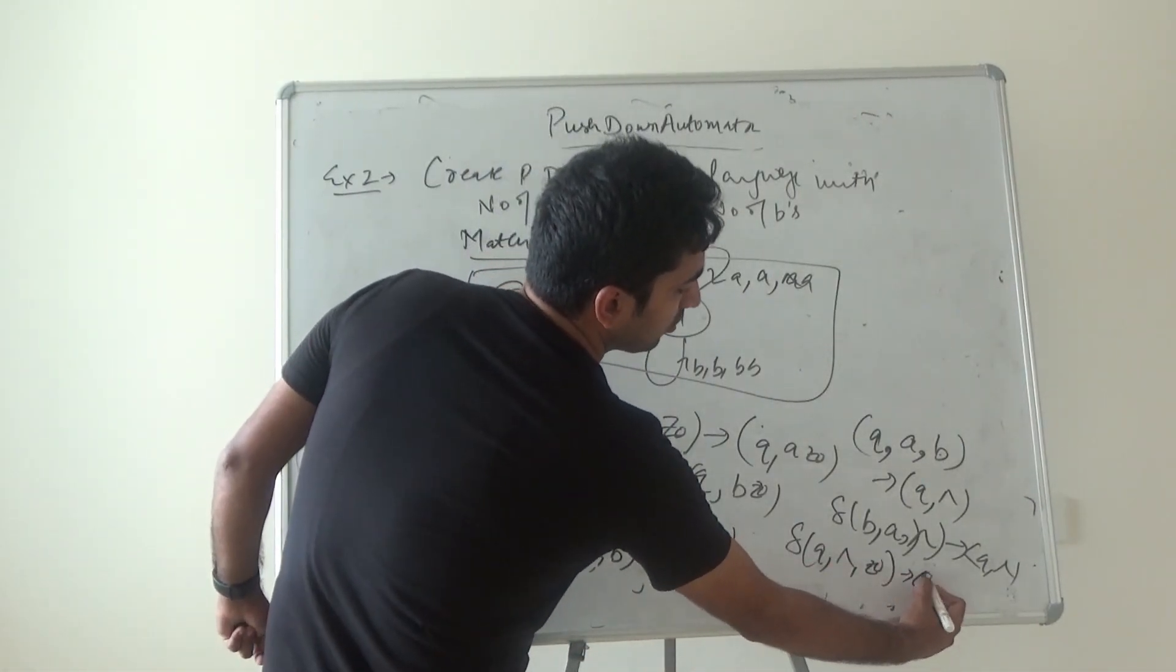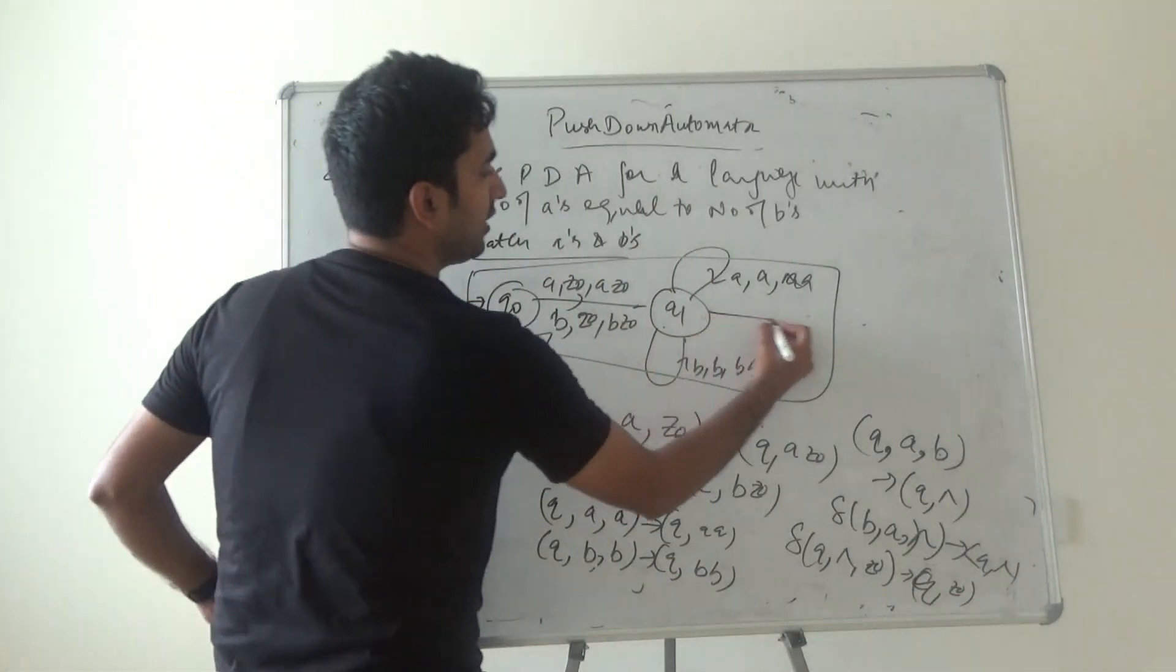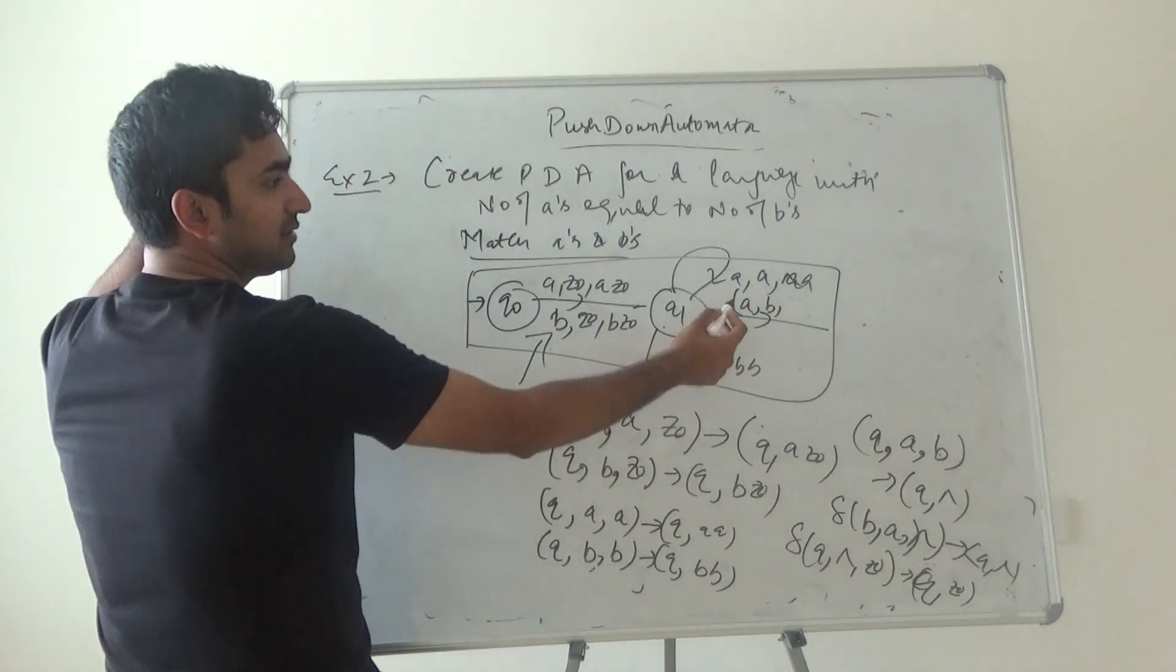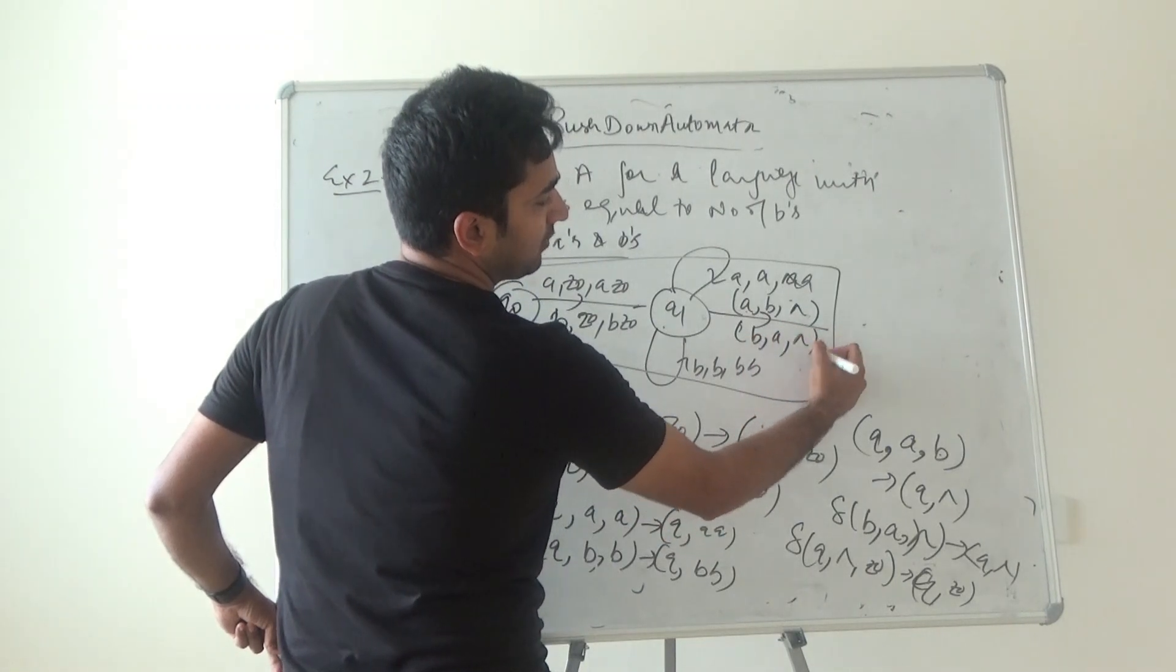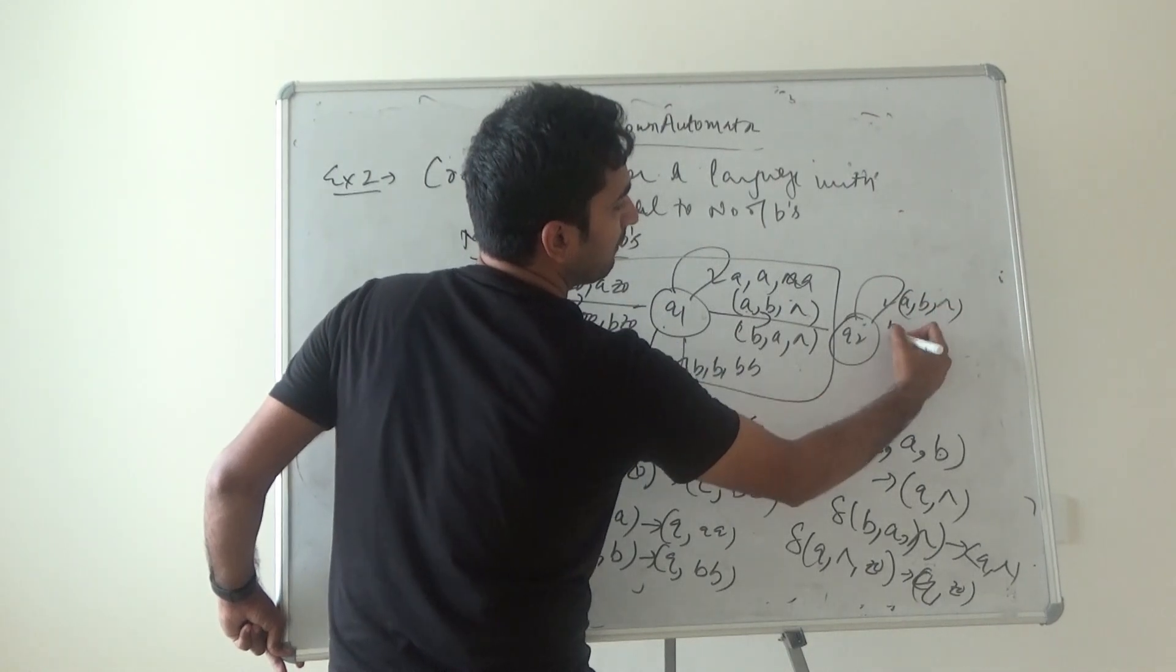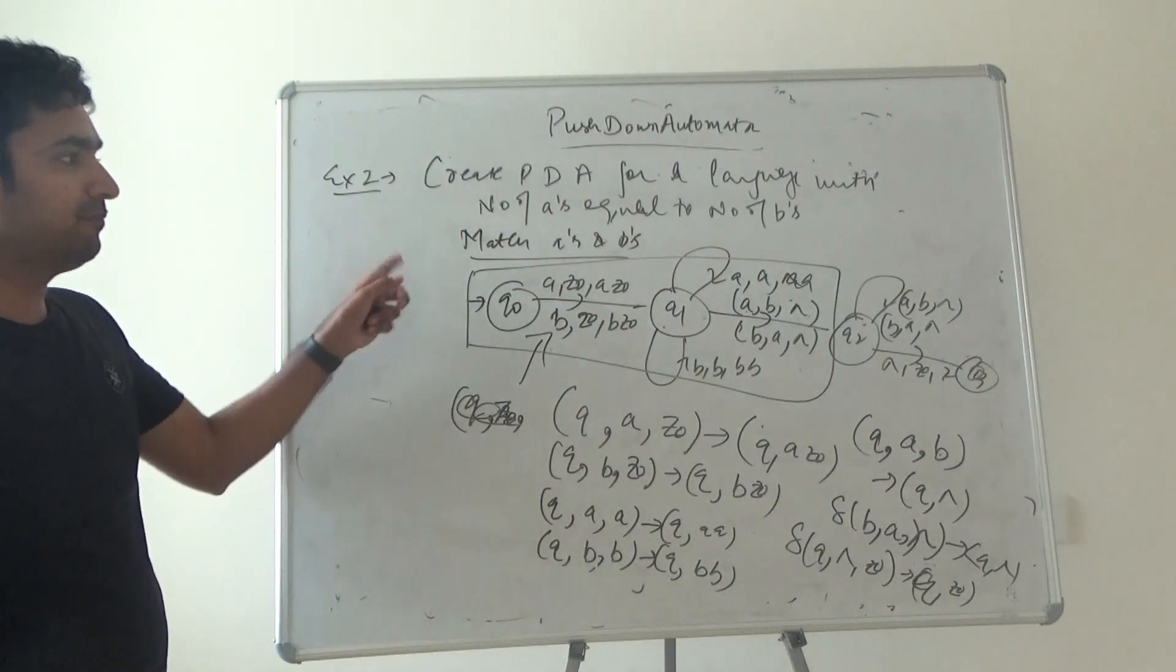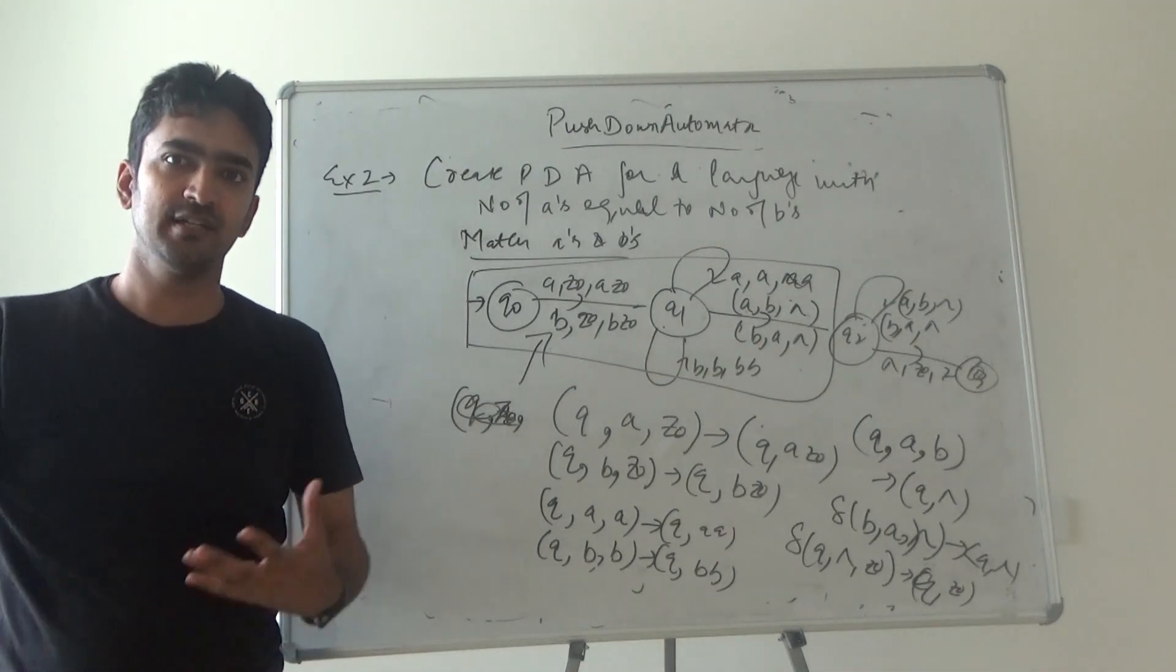Similarly, for example, if we have: (any state, a, b) goes to (any state, null); (any state, b, a) goes to (any state, null). State q2: (a, b) goes to null; (b, a) goes to null. And z0, z0 - this is q3. This is how equal numbers of a's and b's are evaluated: a's get inserted into the stack, b's pop a's out, and vice versa.